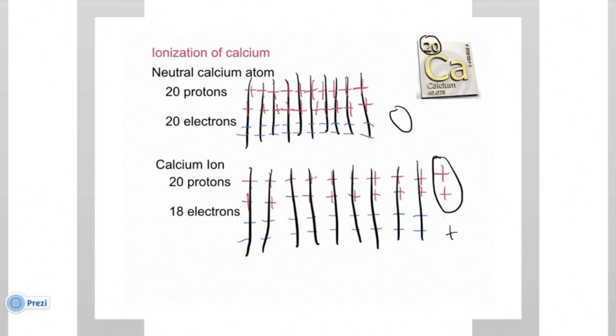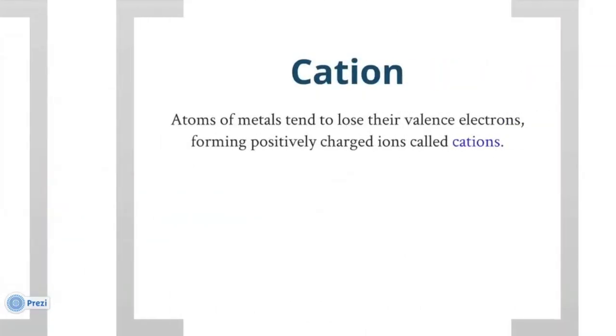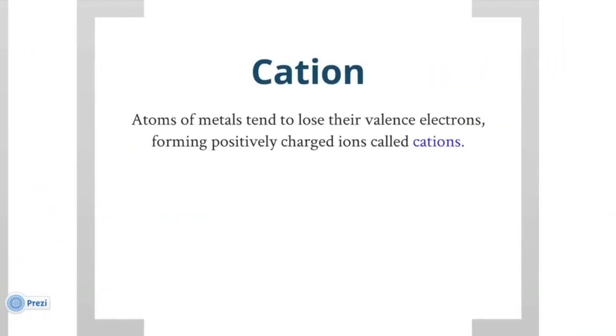So, when we write the symbol for the calcium ion, it's Ca2+. When atoms lose electrons and become ions, they are called cations. Atoms of metals tend to lose their valence electrons. And cations are positively charged ions.